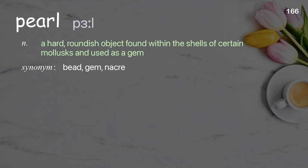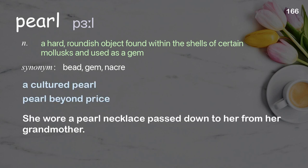Pearl: a hard, roundish object found within the shells of certain mollusks and used as a gem. Examples: A cultured pearl. Pearl beyond price. She wore a pearl necklace passed down to her from her grandmother.